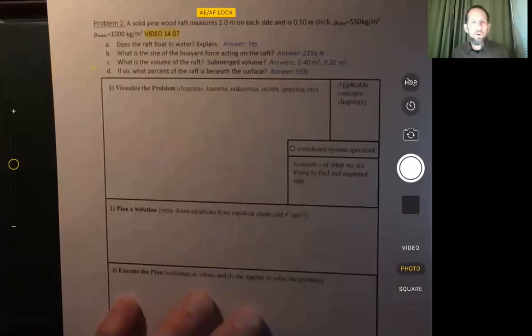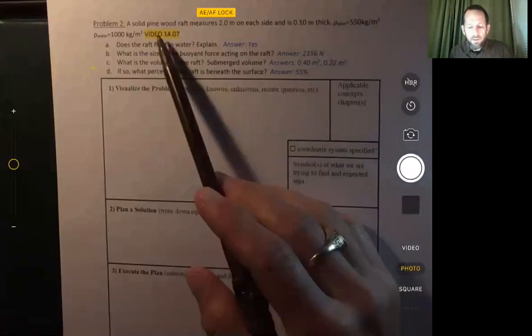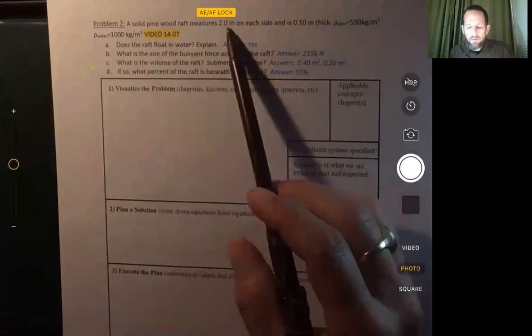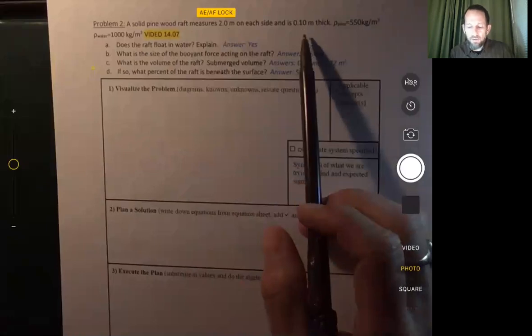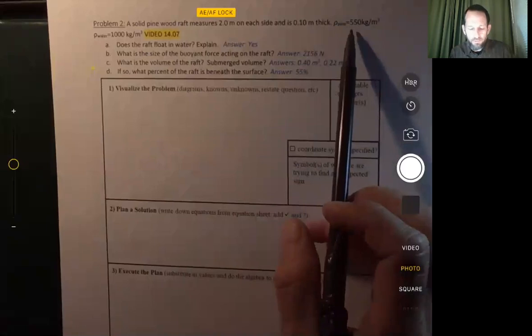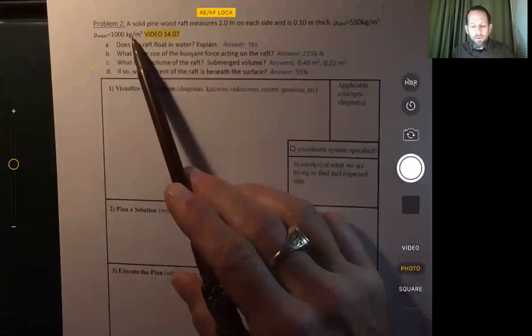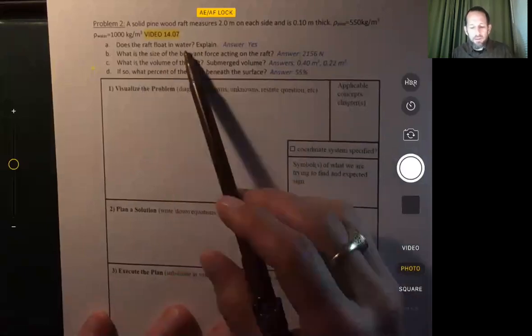All right, hello everyone. We're going to look at a problem of a wooden raft that we know the dimensions of, we know the density of the wood that the raft is made out of, and we know the density of the water it's in. So not a whole lot of given information here. First thing, does the raft float in water and explain?